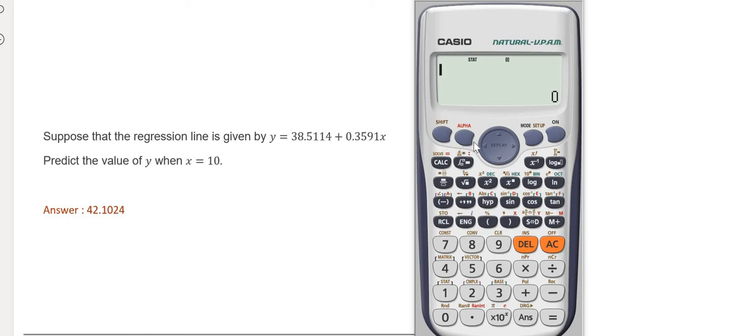First, in your scientific calculator, you need to reset the mode to default. Press the shift button, then press number 9, then press number 3, then press the equal sign button, and then press the AC key.